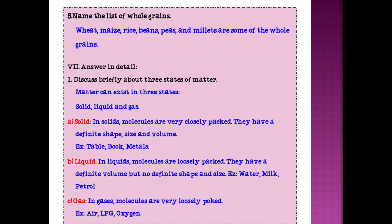Next, name the list of whole grains. Wheat, maize, rice, beans, peas and millets are some of the whole grains. Answer in detail. Now we have finished answer in brief, five questions. Next, we are entering into answer in detail, that is detailed questions. First question.